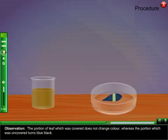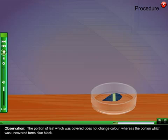Observation: The portion of leaf which was covered does not change color, whereas the portion which was uncovered turns blue-black.